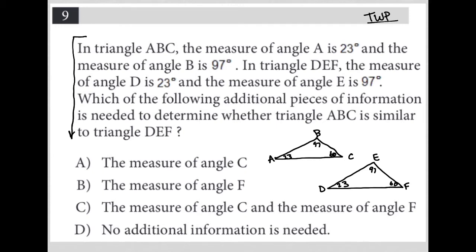Which of the following additional pieces of information is needed to determine whether triangle ABC is similar to triangle DEF? Well, in order to determine if two triangles are similar, all you need to know is that all of the corresponding angles are congruent. And we already know that, so there really shouldn't be any more information required.